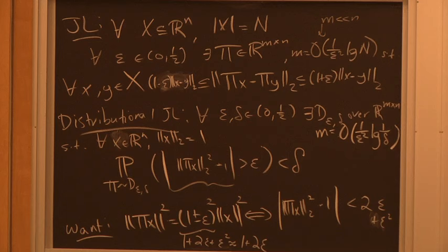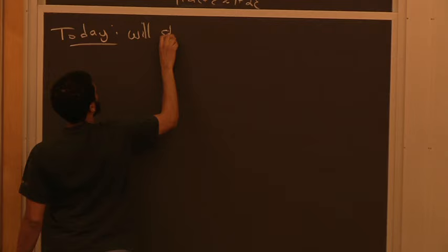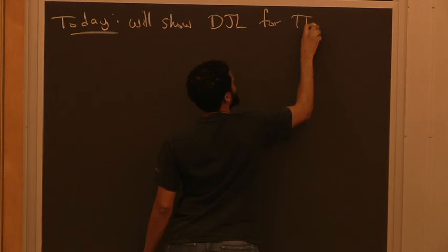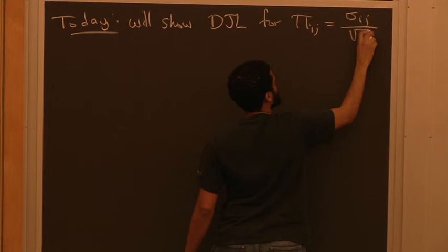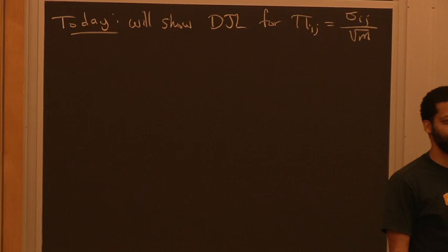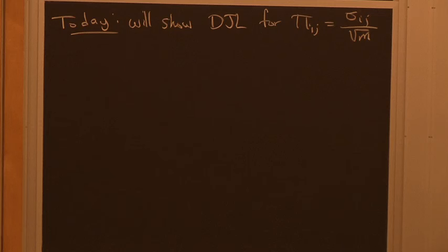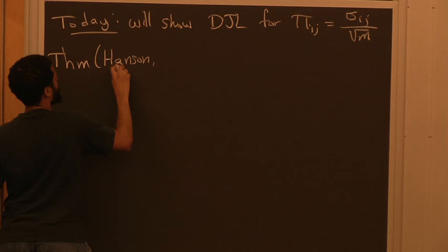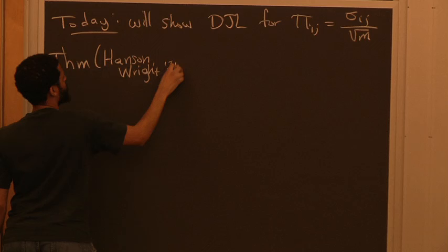That's what we're going to analyze today. We'll show distributional JL for π_{ij} being a random sign σ_{ij} / √m. The way we'll prove it is as a corollary of a concentration inequality. We've been using concentration inequalities — Bernstein, Chernoff, etc. There's one that handles exactly this situation: a theorem due to Hanson and Wright, proved in 1971.